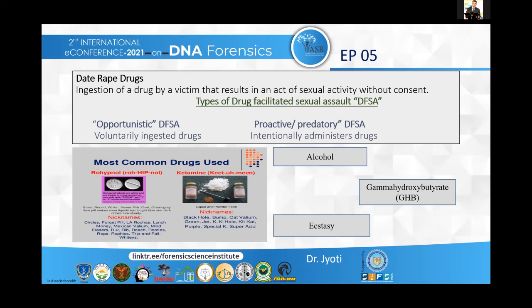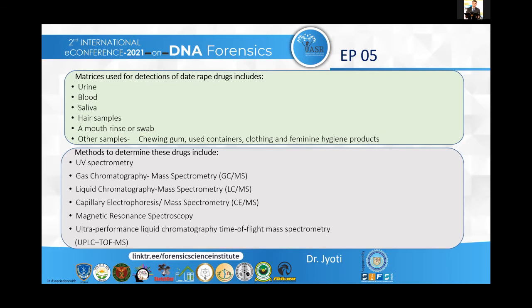Then comes GHB, which is also cited as one of the most common drugs frequently referenced in the literature. It is a depressant that has euphoric and relaxation effects. Then ecstasy, also known as MDMA (3,4-methylenedioxymethamphetamine), is the third most commonly used drug in cases in Australia, after GHB and ketamine. These drugs all have different screening and confirmation methods.